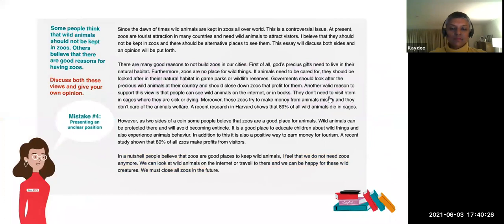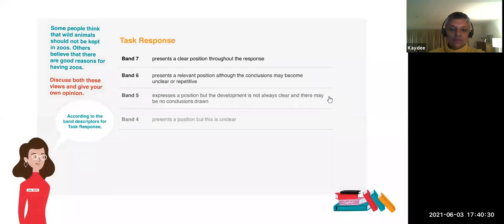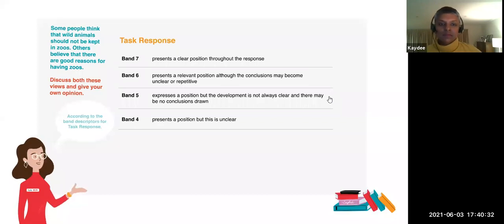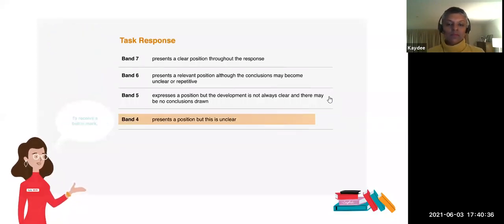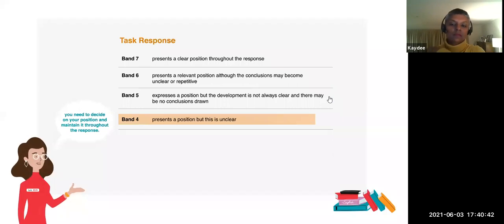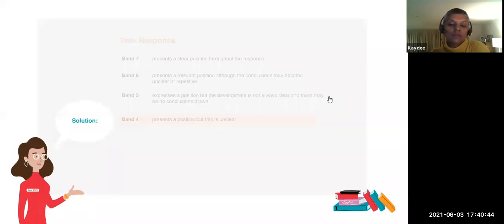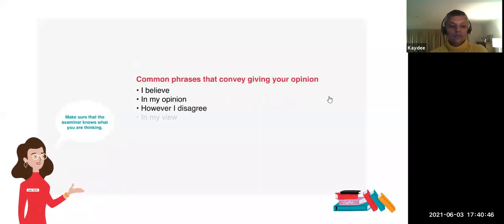Mistake number four: presenting an unclear position. According to the band descriptors for task response, the writer of this task would have received a band four. To receive a better mark, you need to decide on your position and maintain it throughout the response. Solution: make sure that the examiner knows what you are thinking.